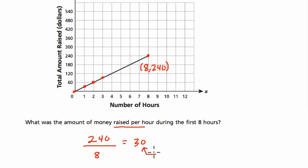That's essentially our slope, right? Our slope is our rate. Our slope is the rate per hour. And you might also represent it as a slope triangle. For example, if I go up from the origin, I go up $240 and over eight.